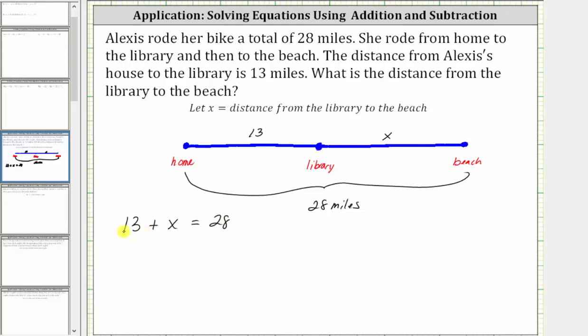So now to solve for x, we need to undo the positive 13 by subtracting 13 on both sides. Simplifying, 13 minus 13 is zero, giving us x equals 28 minus 13, which is 15. So now we know the distance from the library to the beach is 15 miles.